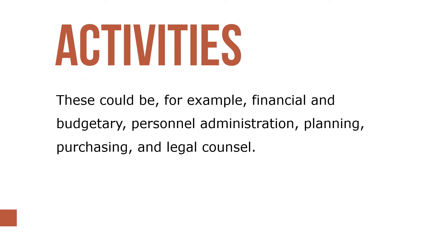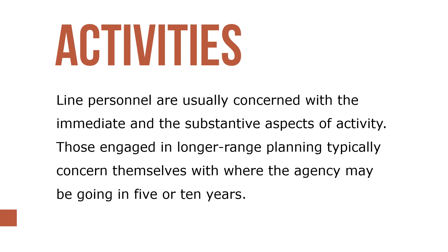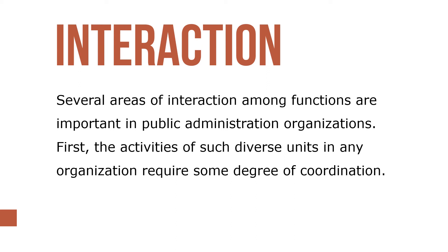Staff functions were originally defined as consisting of advisory activities supporting the ability of line personnel to carry out their duty — such as financial and budgetary matters, personnel administration, planning, purchasing, and legal counsel. Line personnel are usually concerned with the immediate and substantive aspects of activity, while those engaged in longer-ranged planning typically concern themselves with where the agency may be going in five or ten years. Several areas of interaction among functions are important in public administration organizations.